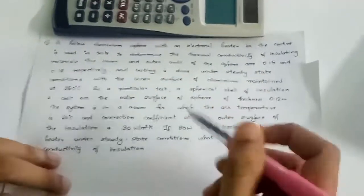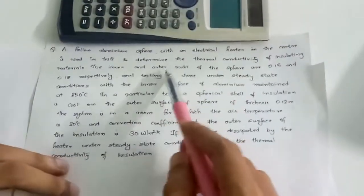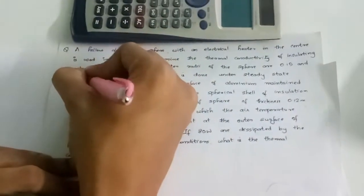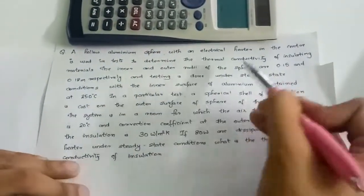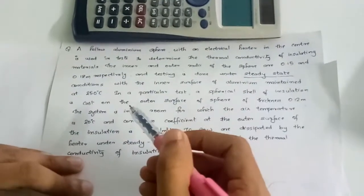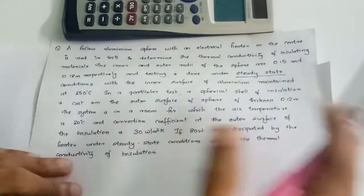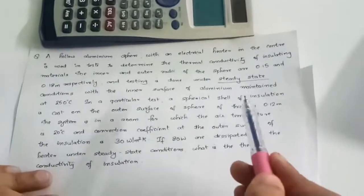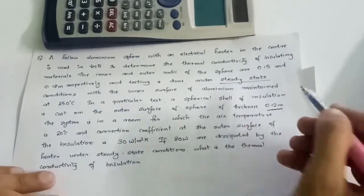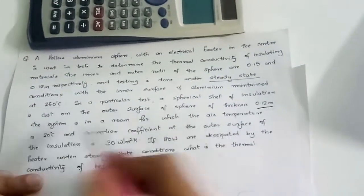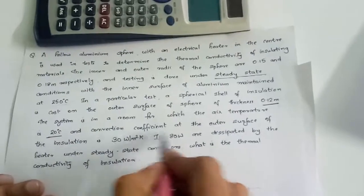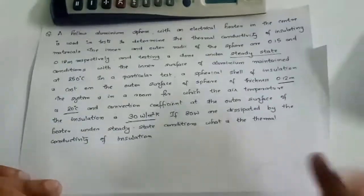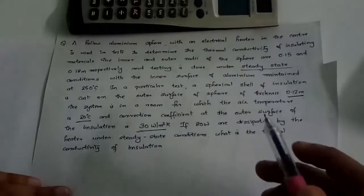Problem: A hollow aluminum sphere with an electrical heater at the center is used to determine the thermal conductivity of an insulating material. The inner and outer radii of the sphere are 0.15 m and 0.18 m respectively. Testing is done under steady-state conditions. Steady state is covered in the first module. The inner surface temperature is given.